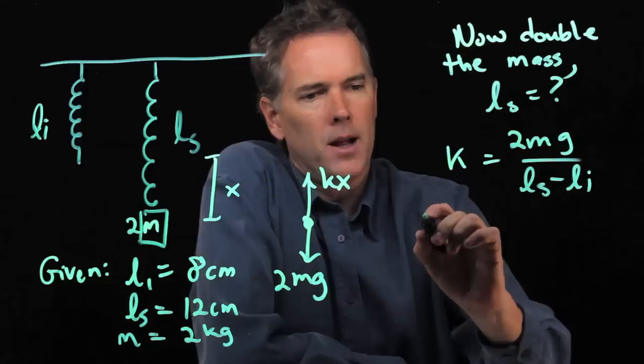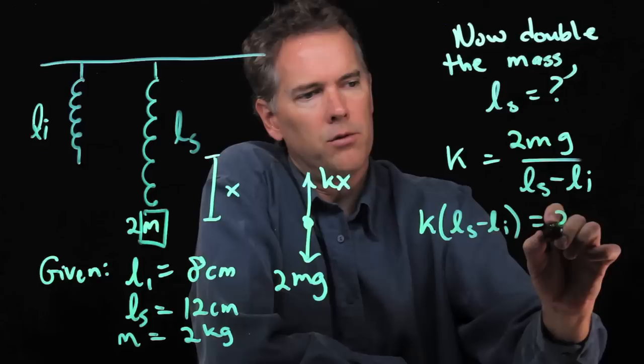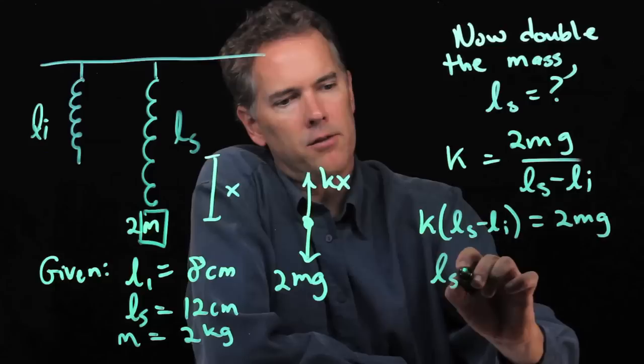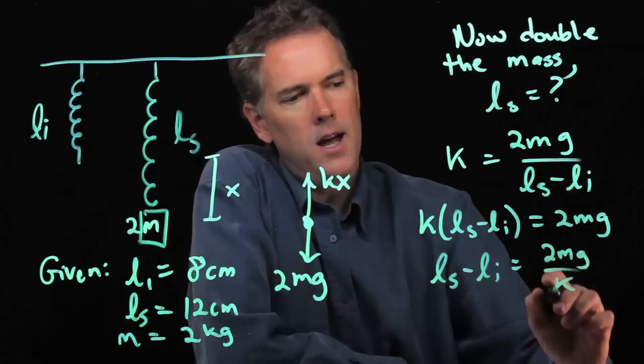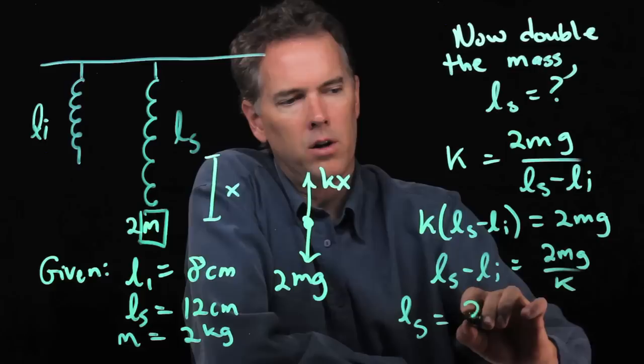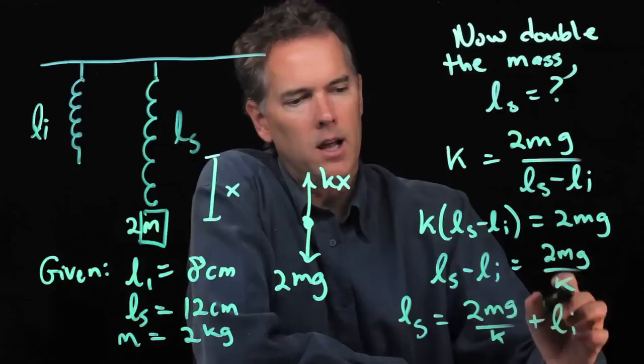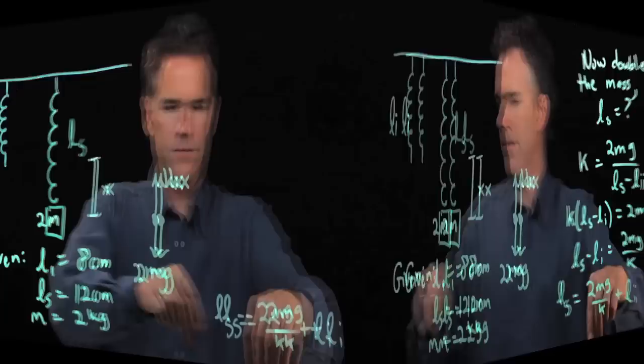Now we want to solve this for LS. Let's multiply across by that quantity: K times LS minus Li equals 2Mg. We can divide by K to get LS minus Li equals 2Mg over K, and then add Li to get LS equals 2Mg over K plus Li. Now we have all those numbers and can plug it in.